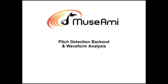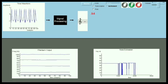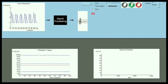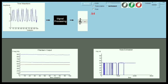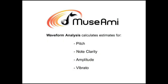Now that you've heard what the correction engine can do, let's look at the backend of the detection process to see what kinds of analysis data is exposed to developers. The waveform analysis process breaks down the input signal into multiple analysis value types, including pitch estimation, clarity rating, amplitude measurement, and vibrato detection. Each one of these vectors can be used to trigger on-screen visuals, scoring metrics, or control the pitch shifter.